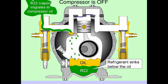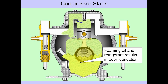Flooding has two types. Type 1 is flooded start, and Type 2 is flooding while the compressor is running. Let's understand flooded start first. If the compressor crankcase heater is not working during the off-cycle, then liquid refrigerant sinks under the compressor oil as shown, and when the compressor starts, foaming takes place and oil circulates with the refrigerant.